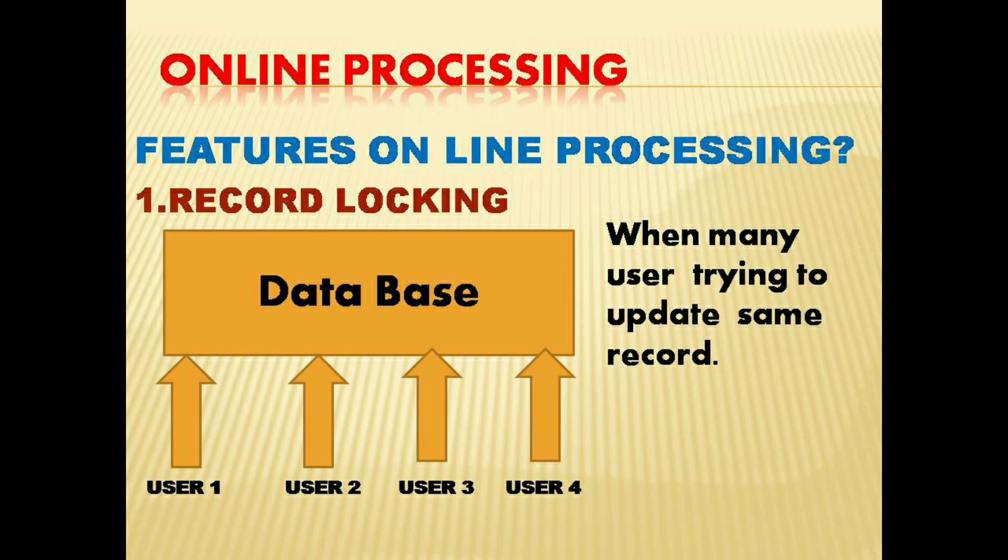As soon as the first user finishes their work, the record is unlocked and made available for the next user in the queue. The first user finishes, then the second user begins, and in between the record remains locked. That is record locking.